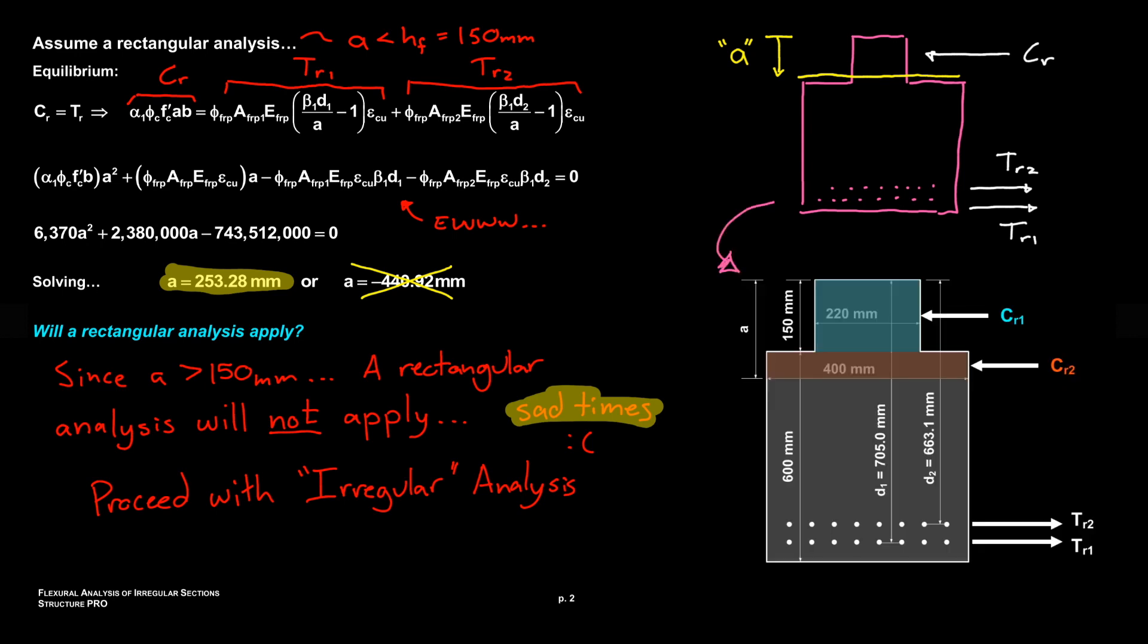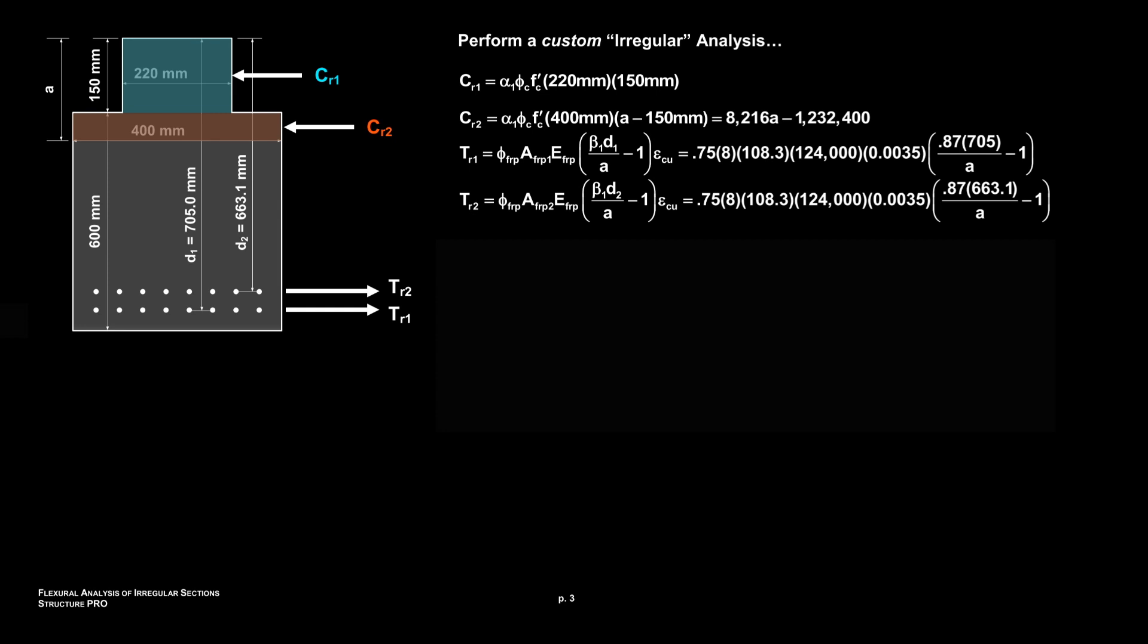So this is the section we're looking at here. Now we're going to have two compression resultants, a CR1 and a CR2 with a different width. So we got CR1, CR2 and then two tension resultants TR1 and TR2, and I've written down the equation for each here so just take a look at them and see if it makes sense to you. But one thing to note is that CR1 is fully defined now so we actually can figure out the resultant of it and it's 677,000 newtons. Again, A is the unknown and again we're gonna end up with a quadratic.